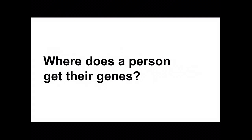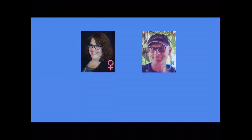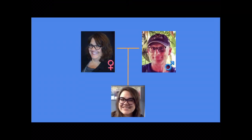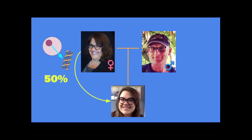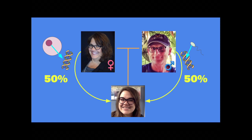Let's start with this question: where does a person get their genes? Well, the first thing you need are parents. My mom produced an egg that contained 50% of her DNA and passed that along to me, and my dad made sperm that has 50% of his DNA, and when those two combined, that made me. So I get 50% of my DNA from my mom and 50% from my dad.